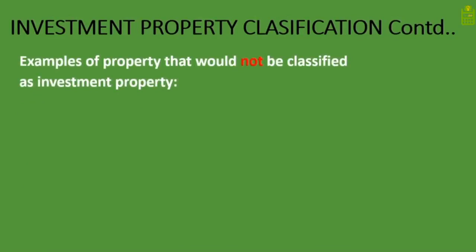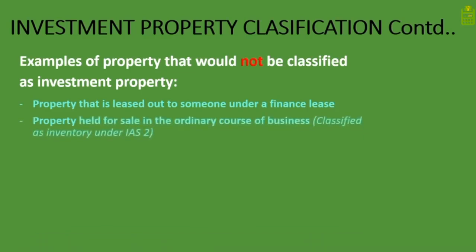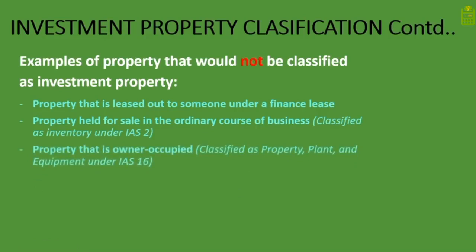Now let's look at examples of property that would not be classified as investment property. First, property leased out under a finance lease — as mentioned, ABC Limited leasing a building under a finance lease will not classify it as investment property. Second, property held for sale in the ordinary course of business is classified as inventory under IAS 2, not investment property.